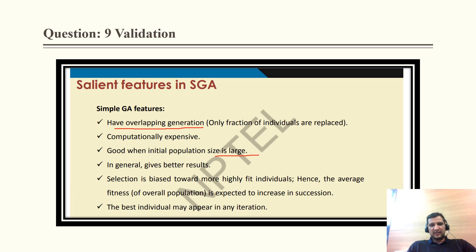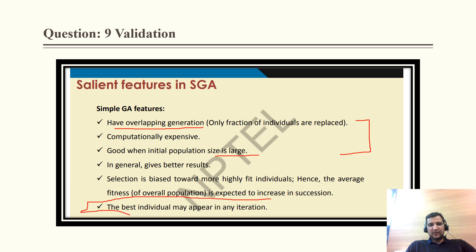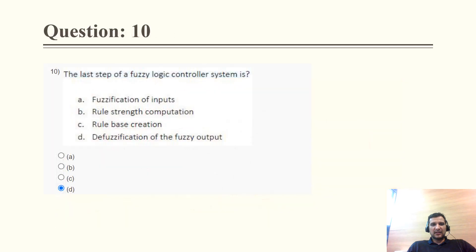For SGA, it performs better when initial population size is large, not small. All other options have negative or incorrect statements. The only correct statement is that the best individual may appear in any iteration, so that is the correct answer.